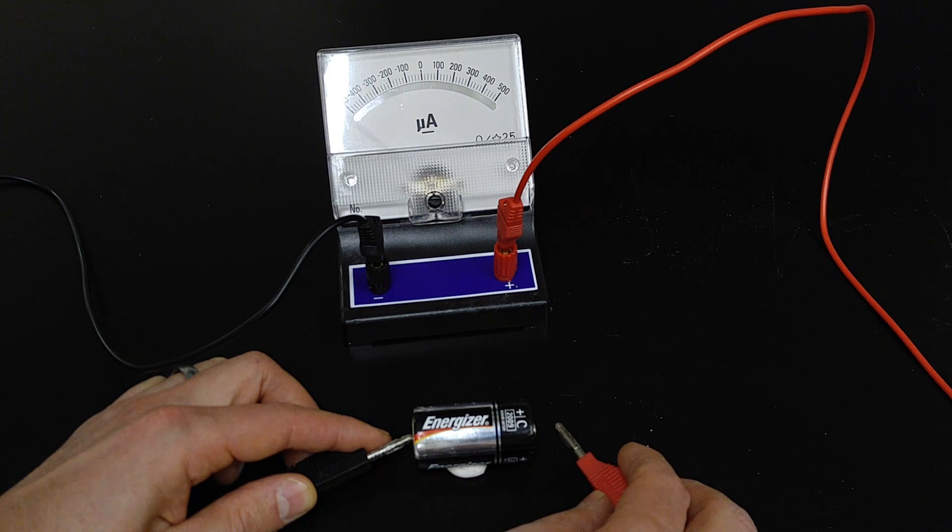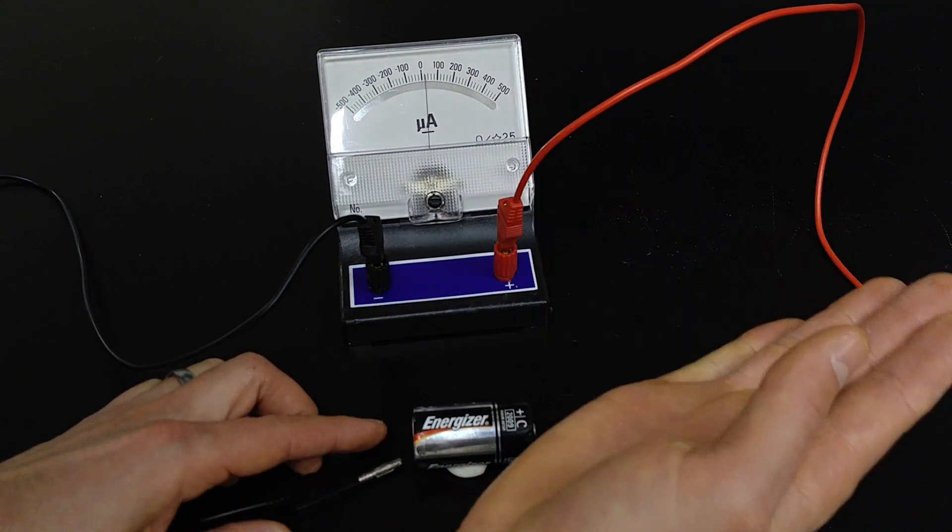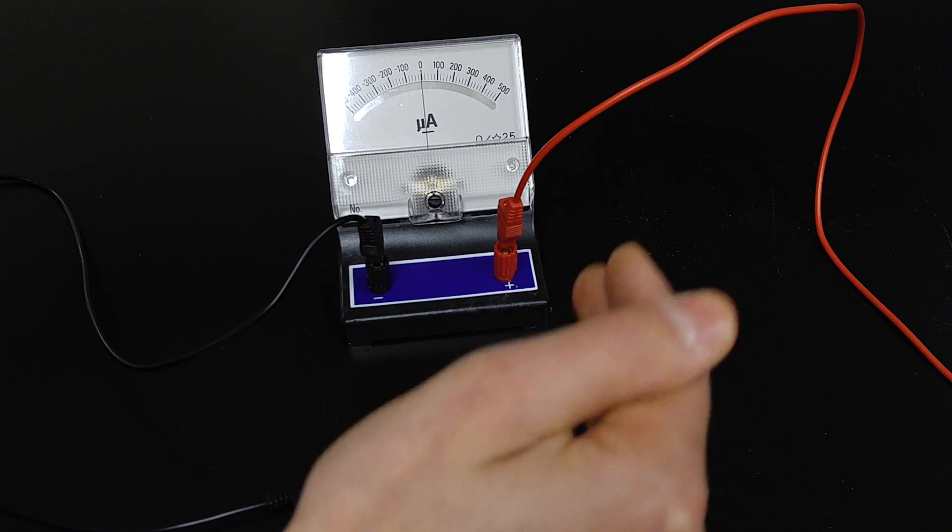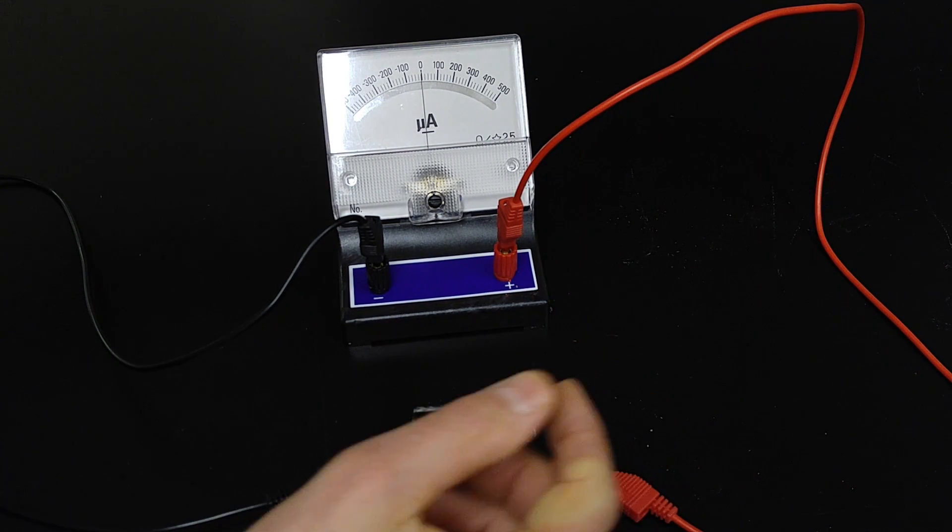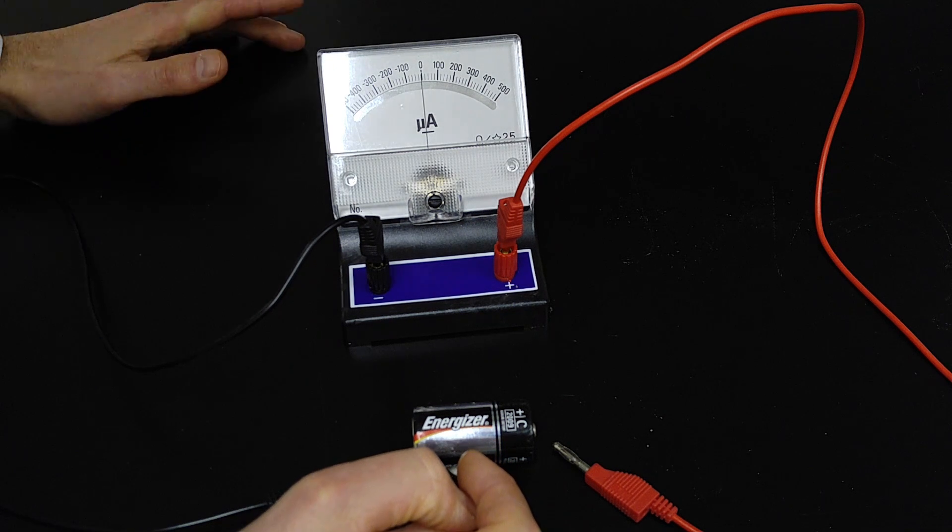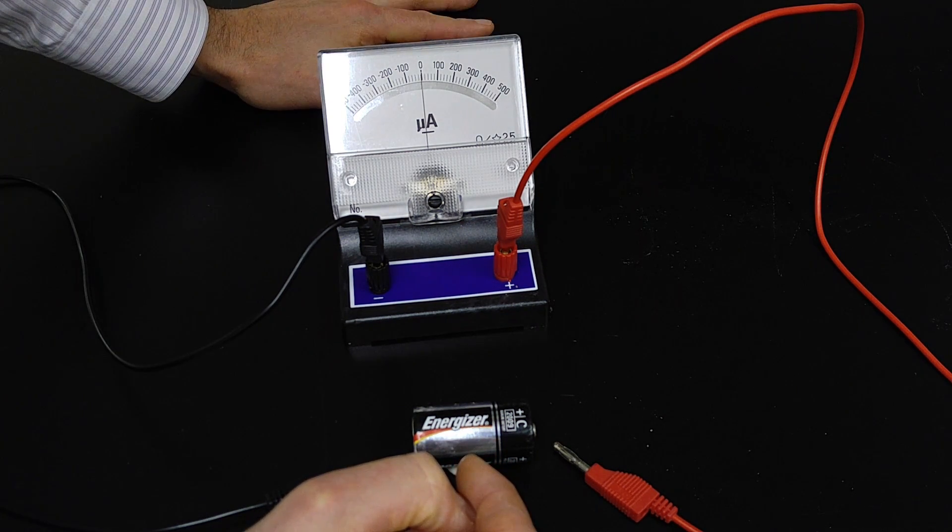You can see that as soon as I make an electrical connection, that needle swings to the right, it swings to the side that's connected to the high potential of the battery, and it's maxing out our meter, it's going way past 500 microamps.